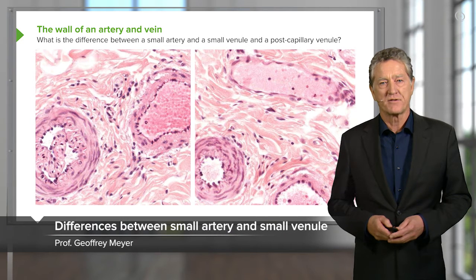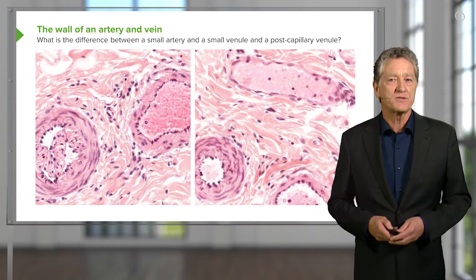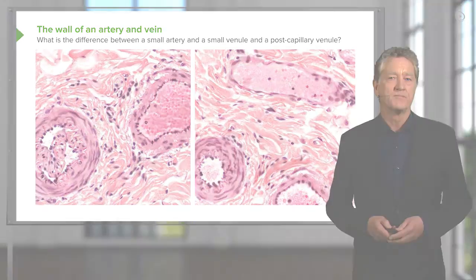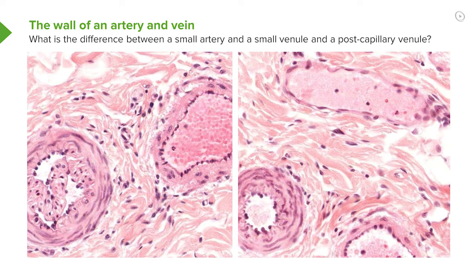Let's have a look at the structure of a vein, a small artery, and a small venule and a post-capillary venule. On the bottom left-hand side of the image, on the bottom of the left-hand side of the image on the right-hand side, is a section through a small artery. It's nice and circular and has a thick wall of smooth muscle. But look at the vessel on the left-hand image on the top right — large lumen, much thinner wall. That's a small vein.